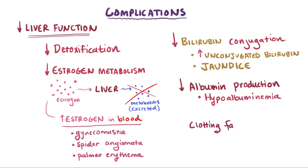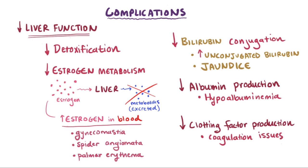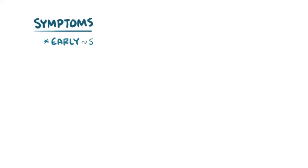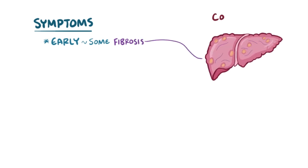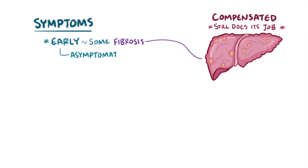Finally, the liver helps in making clotting factors — proteins that help coagulate your blood. When you aren't producing these coagulation factors, you can develop issues related to your ability to coagulate blood, which you need to stop blood loss after an injury. To recap the general symptoms of cirrhosis: early on, with a small amount of scarring and fibrosis, we call it compensated cirrhosis, meaning the liver can still do a lot of its job. In this case, somebody with cirrhosis might not have any symptoms, or they might have nonspecific symptoms like weight loss, weakness, or fatigue.